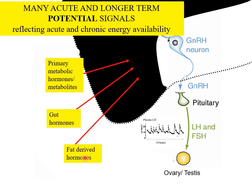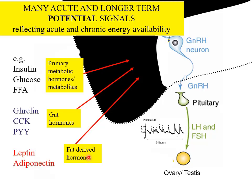For many years none of these were understood at all, but our understanding has advanced tremendously over the last 20 years or so. Primary signals include insulin, glucose, and free fatty acids; gut hormones include ghrelin, CCK, and PYY; and fat-derived hormones include leptin and adiponectin.